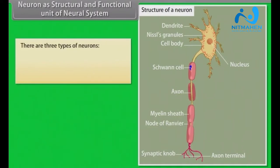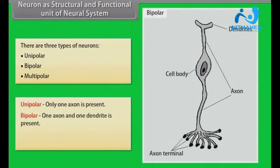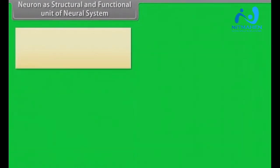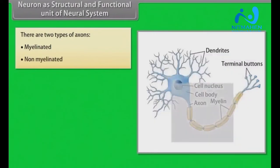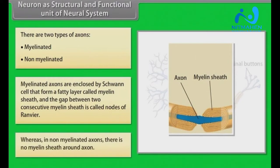There are three types of neurons: unipolar, bipolar, and multipolar. In unipolar neurons, only one axon is present. In bipolar neurons, one axon and one dendrite are present. In multipolar neurons, one axon and two or more dendrites are present. There are two types of axons: myelinated and non-myelinated. Myelinated axons are enclosed by Schwann cells that form a fatty layer called the myelin sheath, and the gap between two consecutive myelin sheaths is called the nodes of Ranvier. In non-myelinated axons, there is no myelin sheath around the axon.